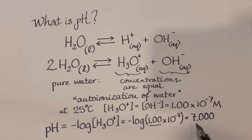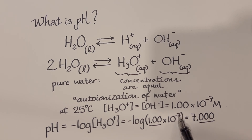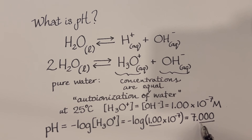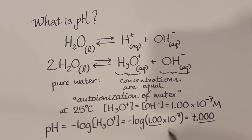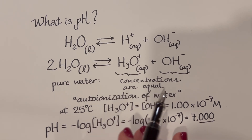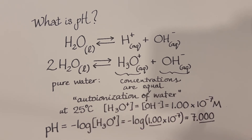You might look at 7.00 and say that's four significant figures, but this is the interesting thing about using logarithms. The value before the decimal point is identifying where we're at with the power — these digits past the decimal point are actually the significant figures. So three significant figures in the concentration gives three significant figures past the decimal point in the pH. This video isn't focusing on significant figures, so our goal is to understand what pH is and how to do calculations with it.